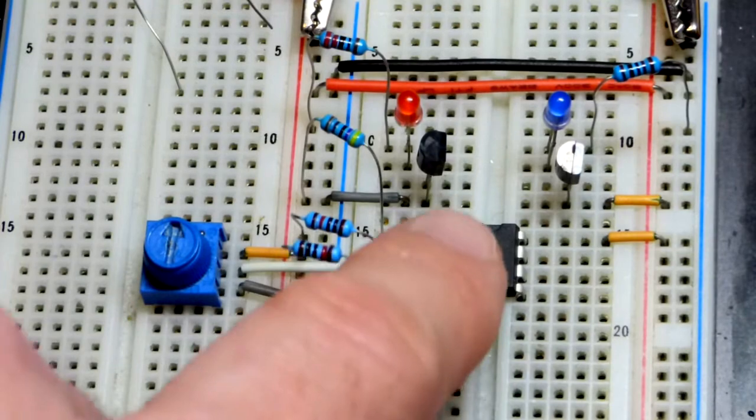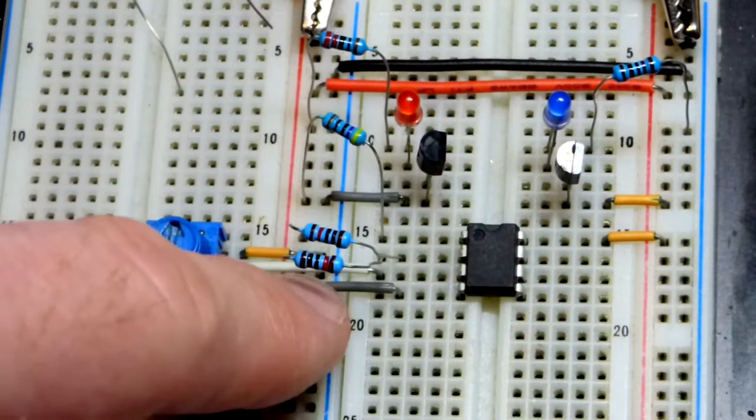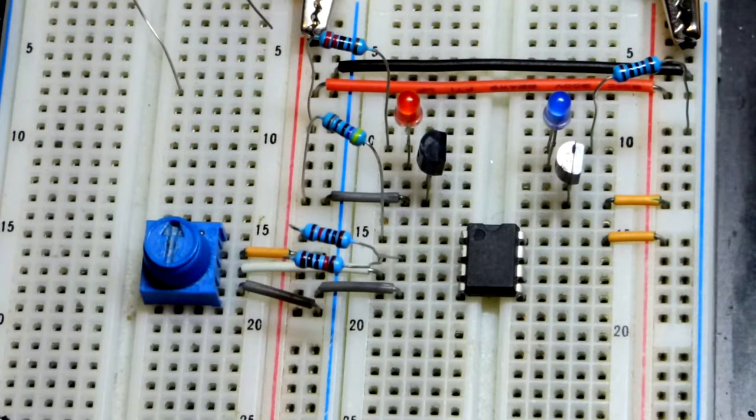We got this 470 ohm resistor coming from the positive supply. So we're getting that positive supply voltage right there when the output is high. When it's low, the output connects directly to ground right there. So whatever current gets through that resistor just goes directly to ground.